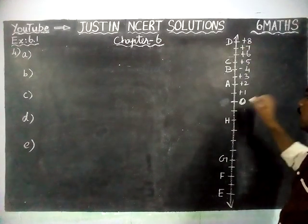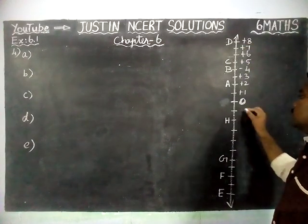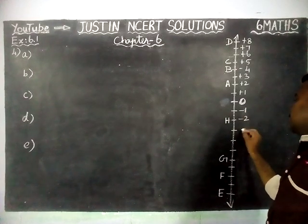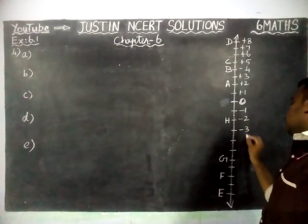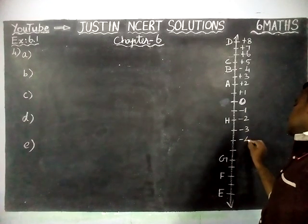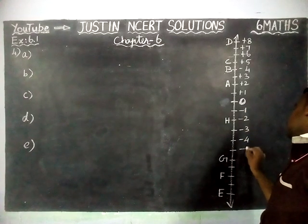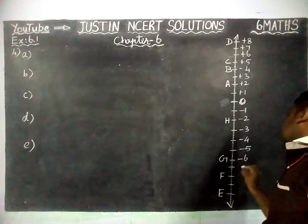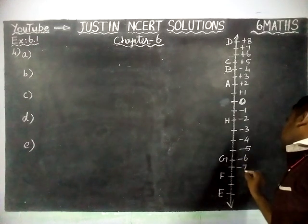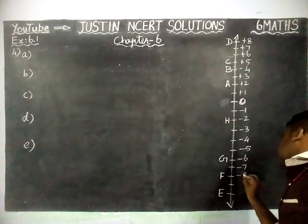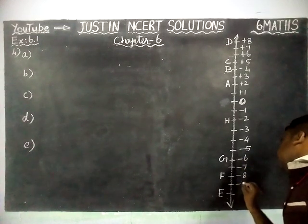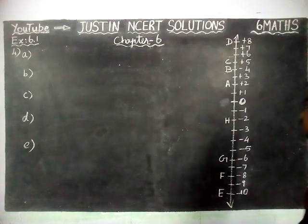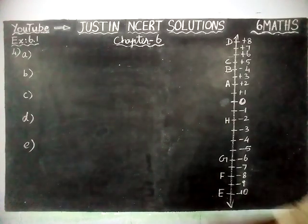And below 0, negative numbers: minus 1, minus 2, minus 3, minus 4, minus 5, minus 6, minus 7, minus 8, minus 9, and minus 10. Now we are going to give answers for the given questions.